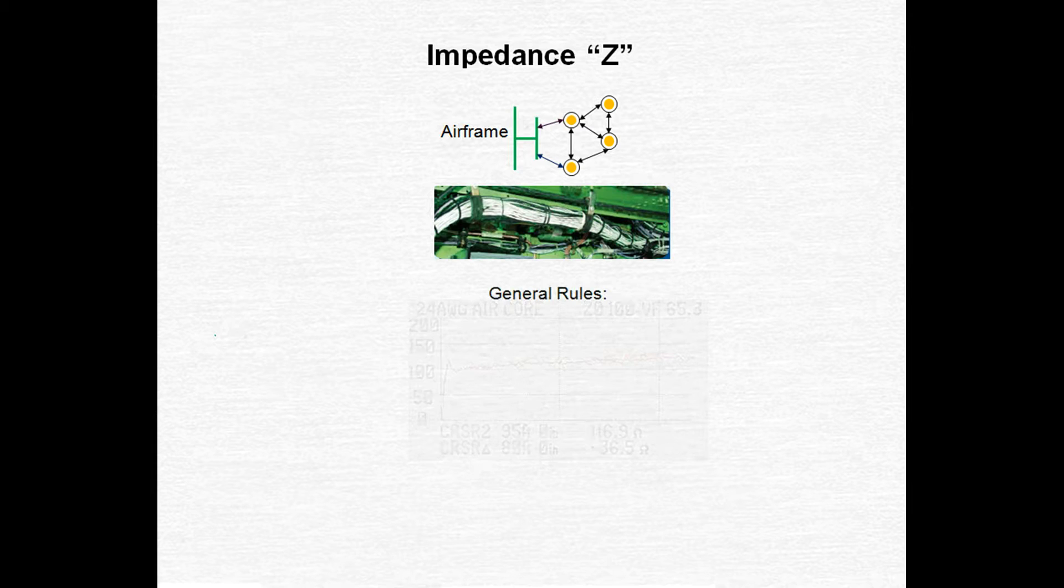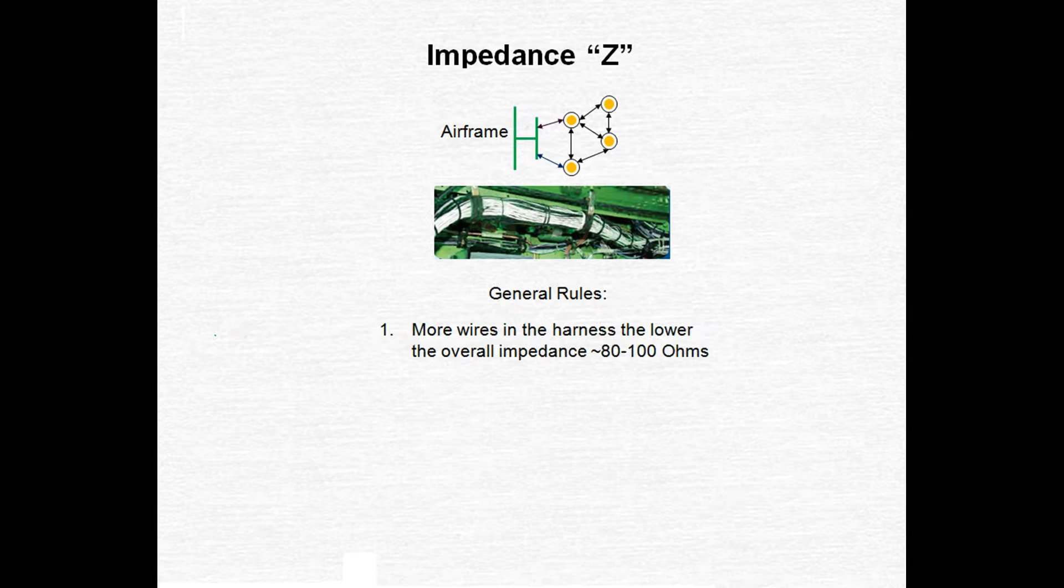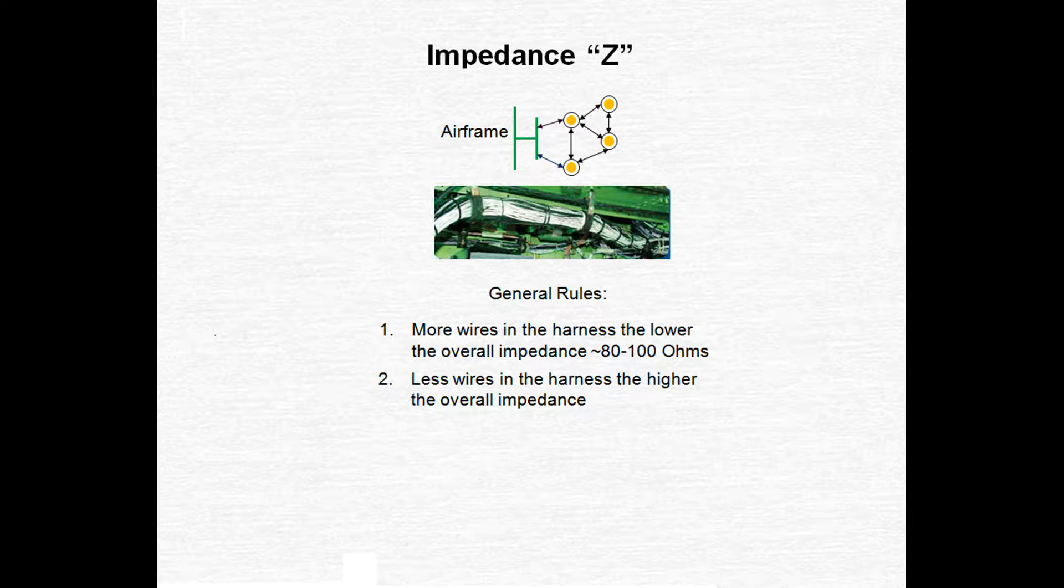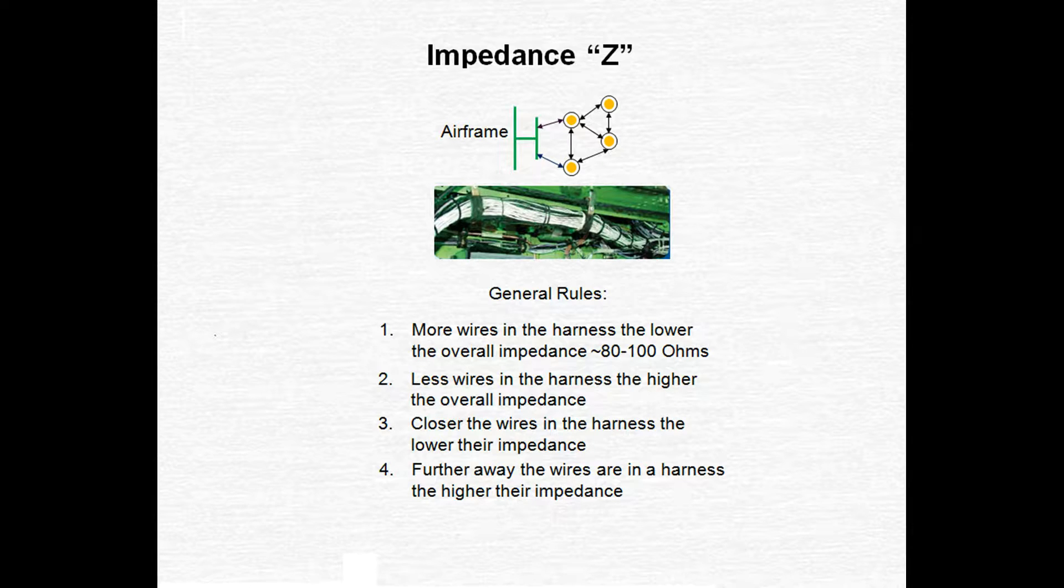So let's throw some general rules out for impedance. More wires in your bundle, the lower your overall impedance will be. And likewise, the fewer wires in the bundle, the higher your impedance will be. Closer wires result in a lower impedance. Wires further apart result in a higher impedance. And finally, these rules apply to any wire or airframe that's next to the wire you're measuring.